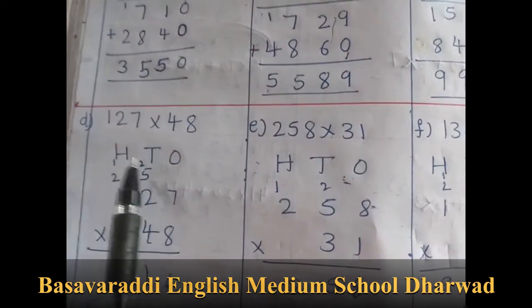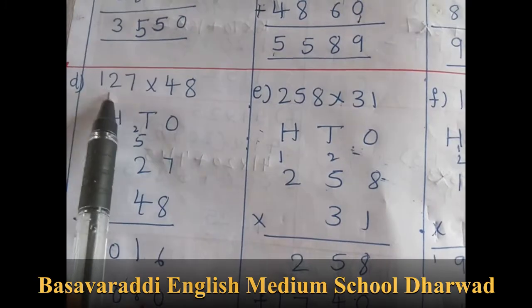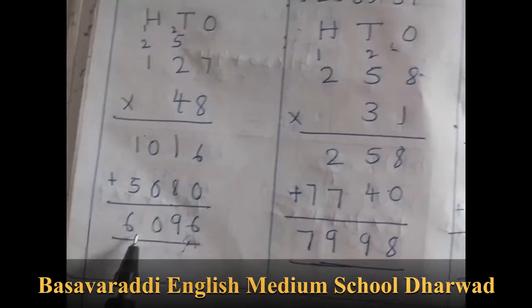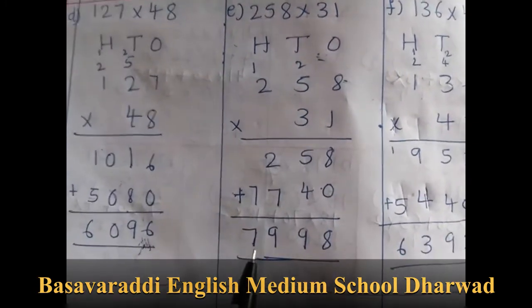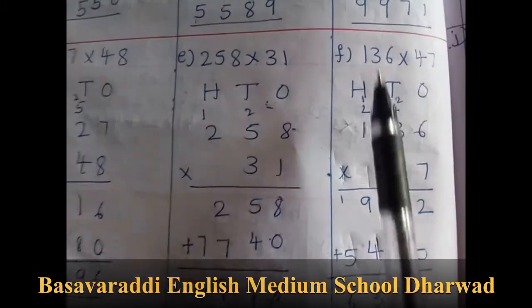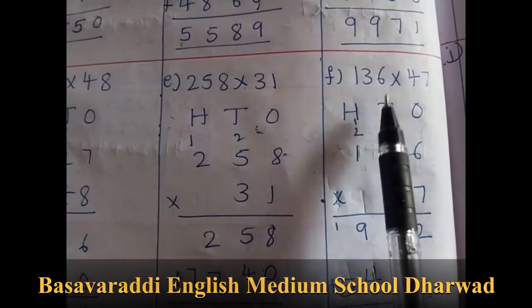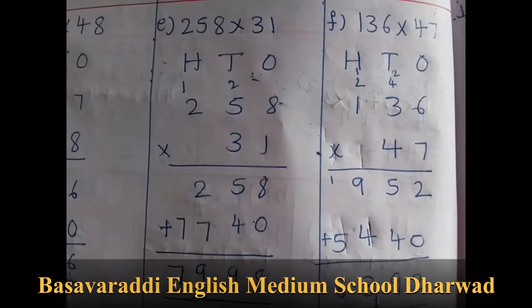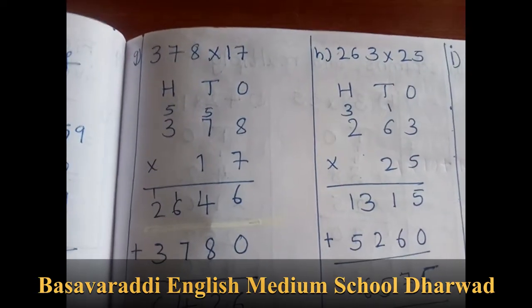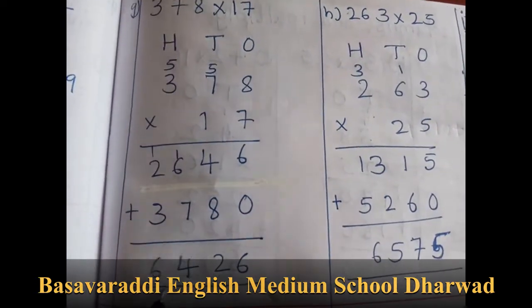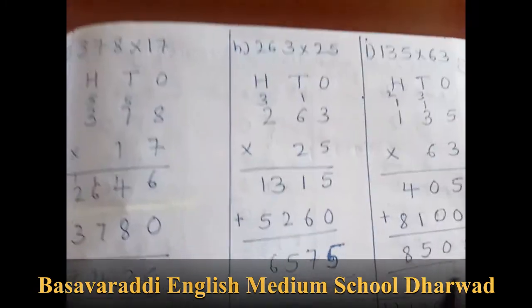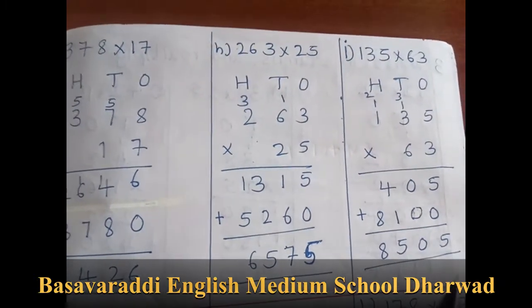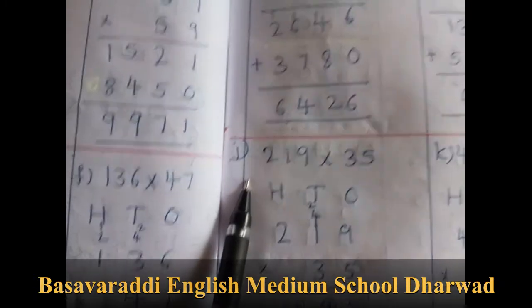Same like this: 127 into 48, the answer is 6096. And 258 into 31, the answer is 7998. F1: 136 into 47, the answer is 6392. G1 answer is 6426. And H1 is 6575. J1 is 8505.